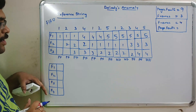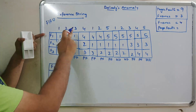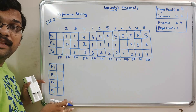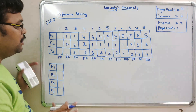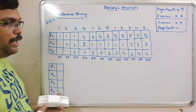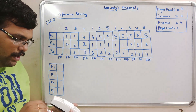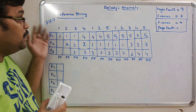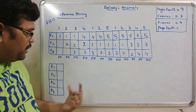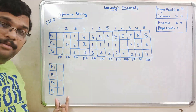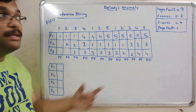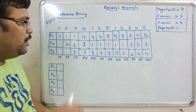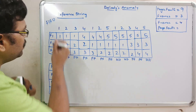Applying the same reference string with 4 frames, according to our assumption, increasing the number of frames should automatically decrease the number of page faults. Let us check.